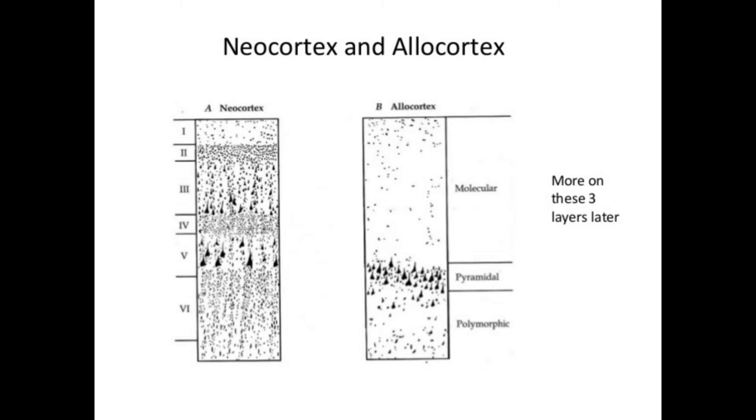Here, you can see what we call neocortex and allocortex. It's a very old layer. We have also allocortex in our brain, referring to some very primitive brain regions. This is also important to understand what the author says in the text.